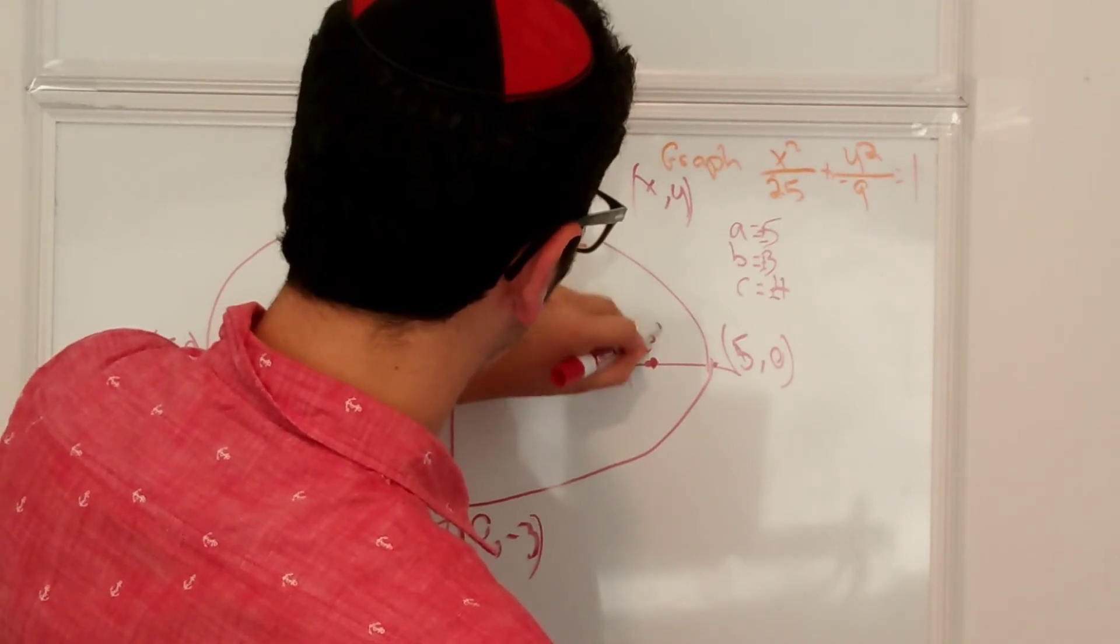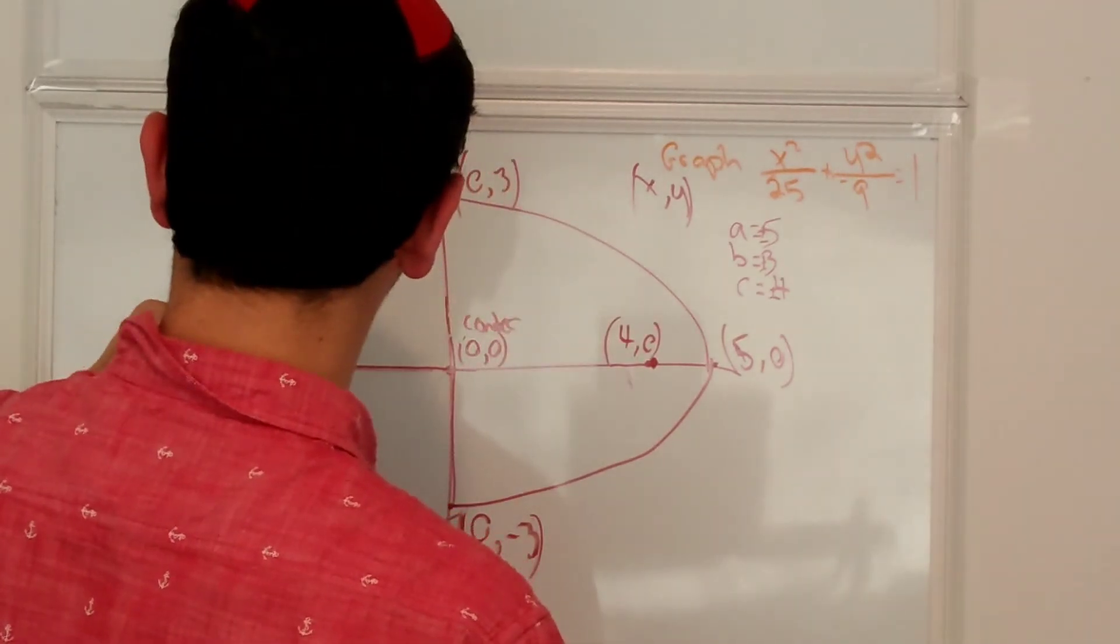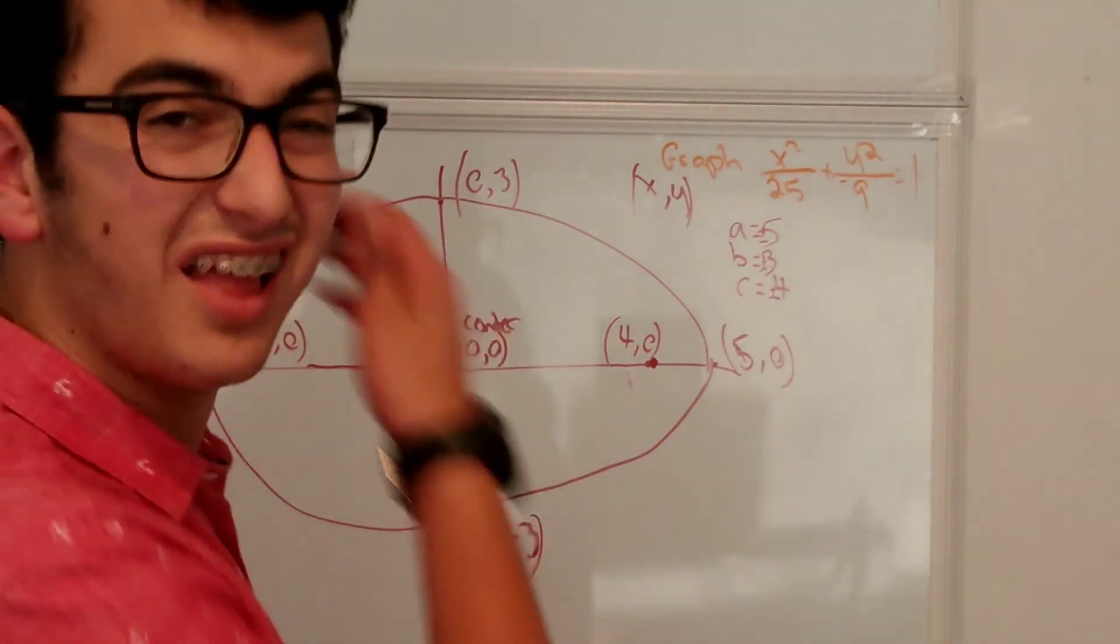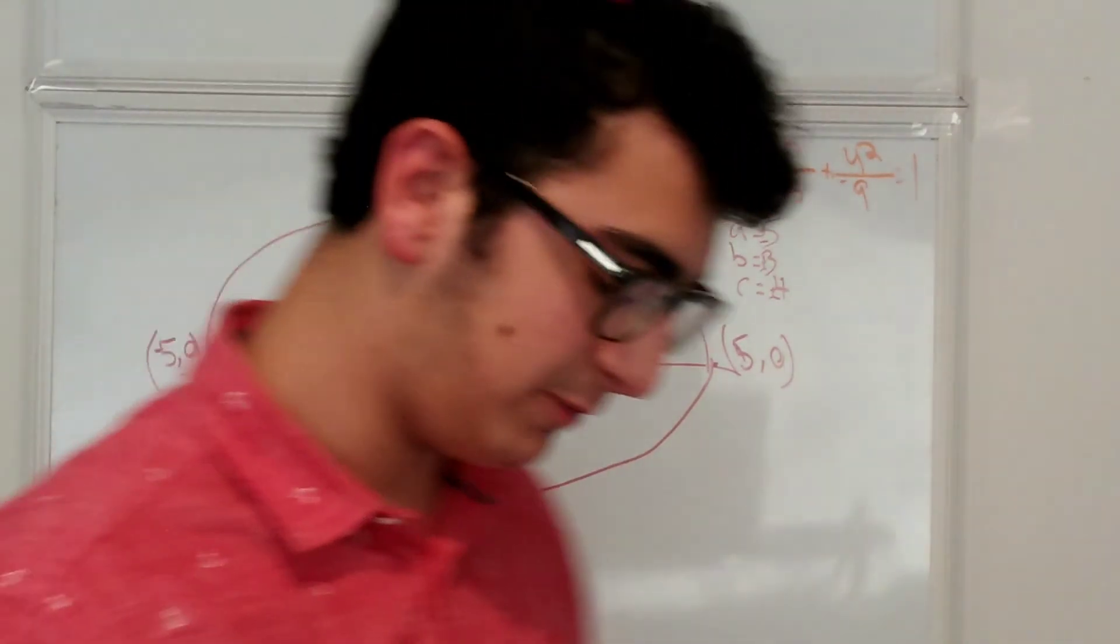Then it's right over here. So this is going to be 4, 0. And minus 4, 0. So here's your ellipse. It looks magnificent in every way possible.